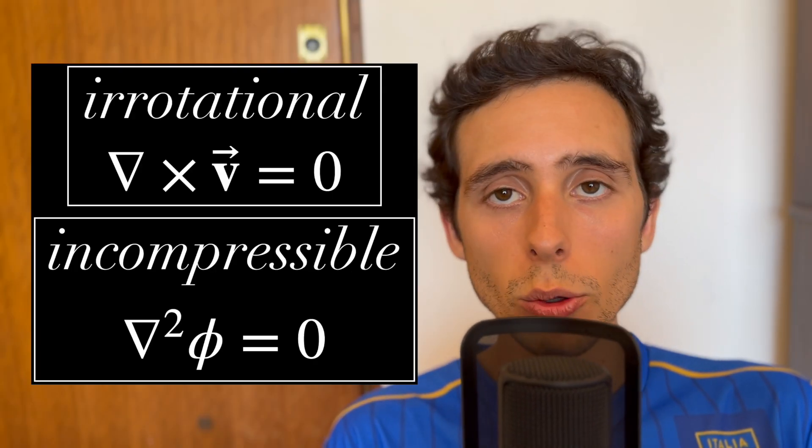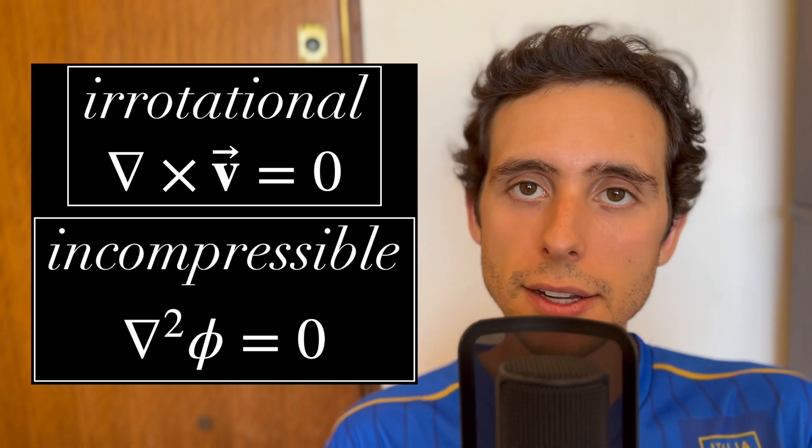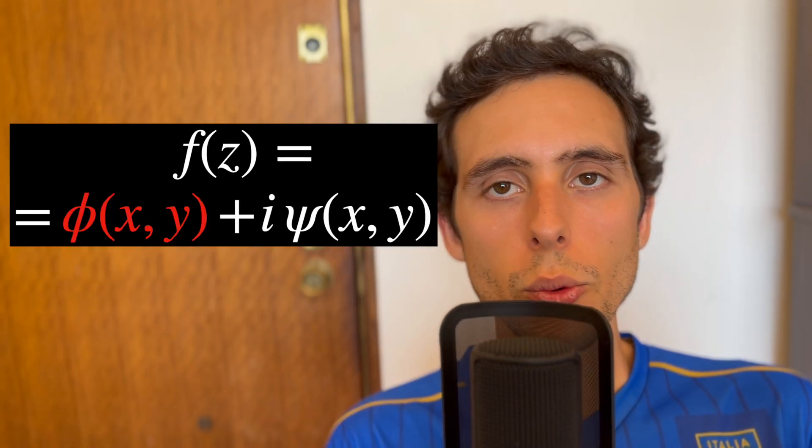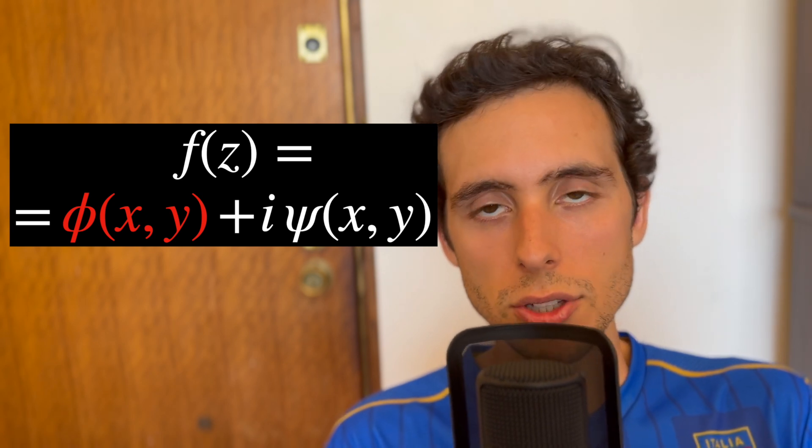So in conclusion, irrotational means that, and incompressible means that. We talked about the real part of the function f of z, namely the scalar field velocity potential phi.